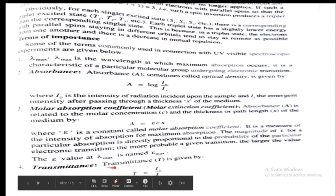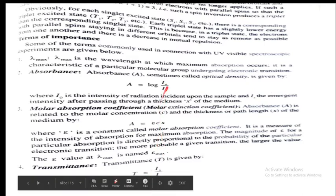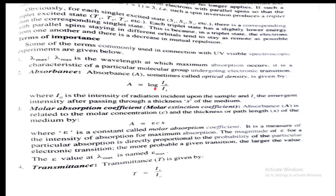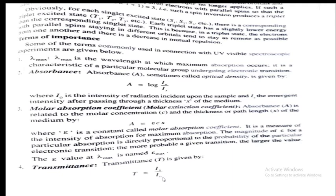The next term is transmittance, denoted T. Transmittance T equals Ix divided by I0. That means A equals log 1 by T. Transmittance is the ratio of emergent radiation divided by the incident radiation on the sample.